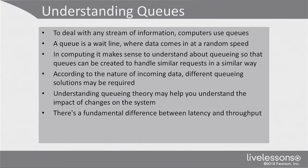A queue is a wait line where data comes in at random speed. It's very important to realize that the speed at which data is coming in is random and cannot be predicted. In computing it makes sense to understand queuing so that queues can be created to handle similar requests in a similar way. According to the nature of incoming data, different queuing solutions may be required. There is a fundamental difference between handling latency and throughput.